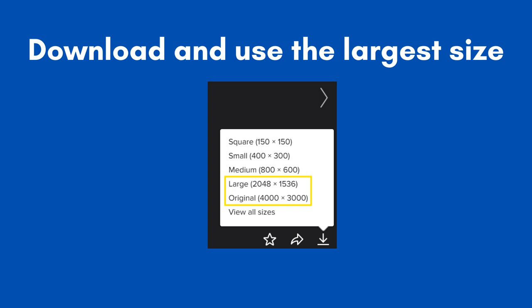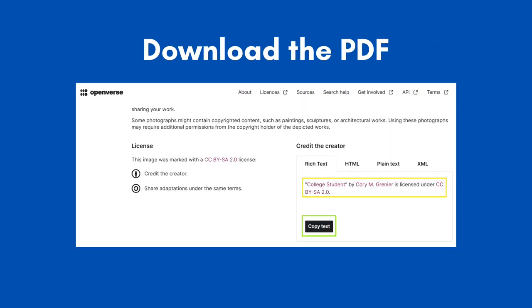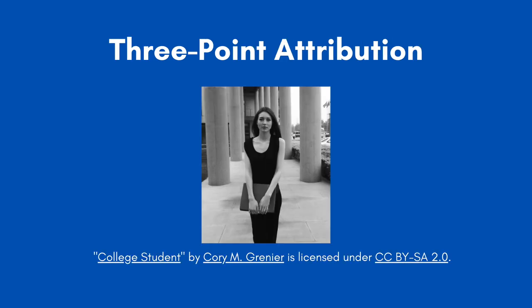Once you've downloaded it, go back to the OpenVerse page for one last step. Scroll down to where you see 'Credit the Creator,' then click 'Copy Text.' This will copy something called a 3-point attribution, which is like an in-text citation for an image. Next, upload the image and place it on your project, then paste the 3-point attribution you copied from OpenVerse underneath.